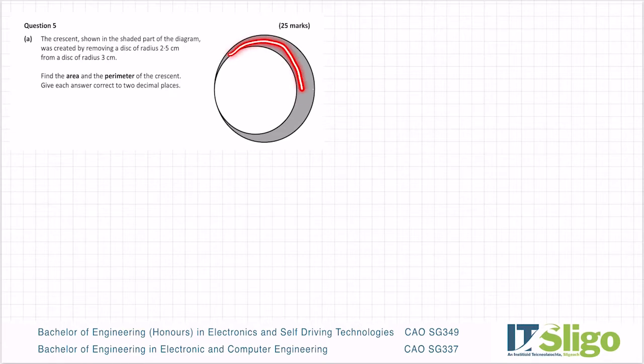A crescent—you often hear of the moon being described as a crescent—it's this gray area here, and it's formed by removing this disk here from the larger circle. The radius of the smaller disk is 2.5, and the radius of the larger disk is 3 centimeters.